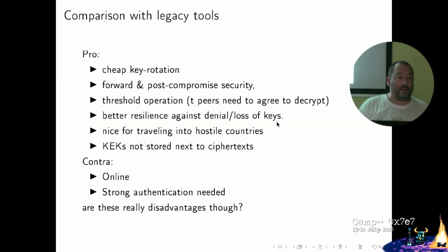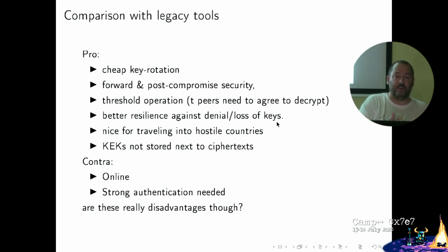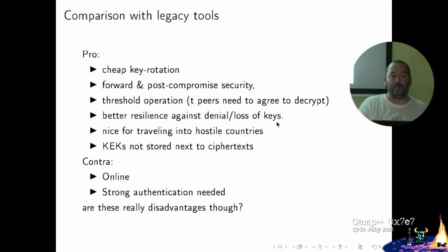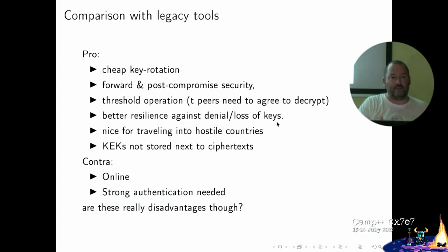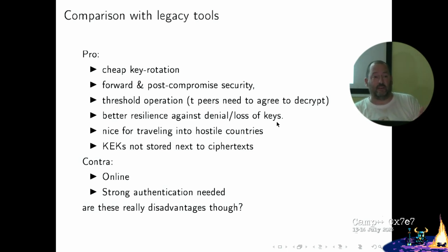The key encryption key is not stored next to your encrypted data. Most people have their PGP key on the same hard disk as their encrypted data — if someone gets the disk they just brute force the password. In this case, the key encryption key is shared and difficult to access. That said, this system requires strong authentication, and it's online — which may be considered a drawback. With PGP, authorization is simply knowing the password that decrypts your private key. In this system you need strong authorization protocols guarding your use of the key in the KMS.